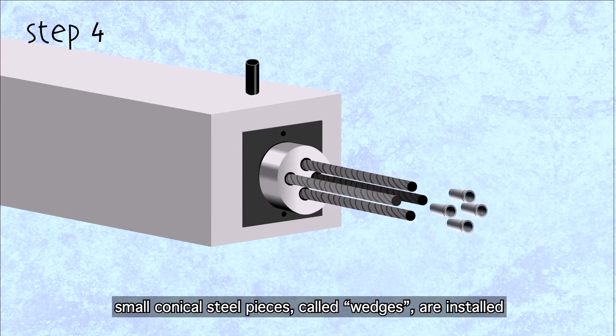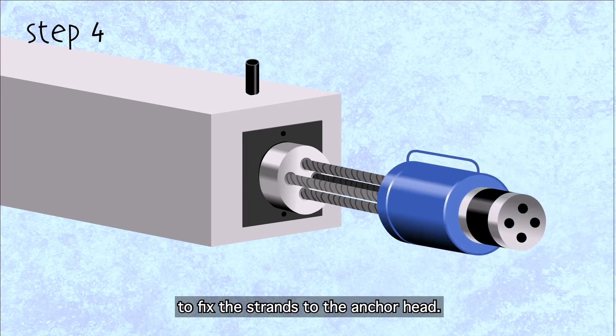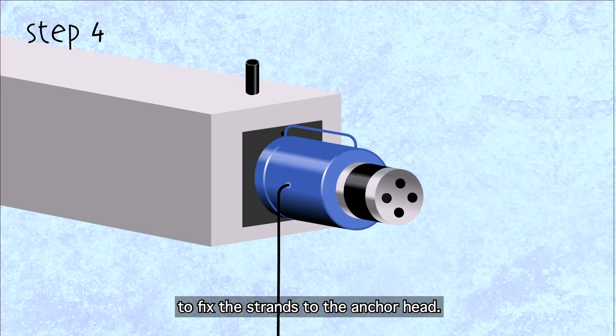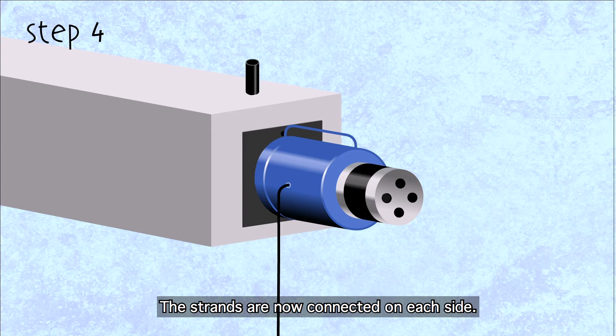Step 4. Small conical steel pieces, called wedges, are installed to fix the strands to the anchor head. The strands are now connected on each side.